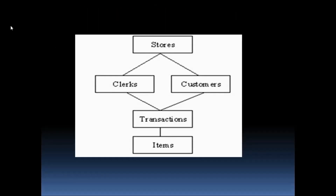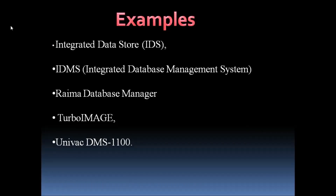You can see in the example that children can have more than one parent. The real-world examples of network databases are: Integrated Data Store (IDS), Integrated Database Management System (IDMS), RIMA Database Manager, Turbo Image, and UNIVAC DMS 1100. But in today's world, we are using relational databases more compared to network and hierarchical databases.